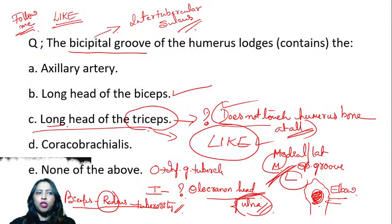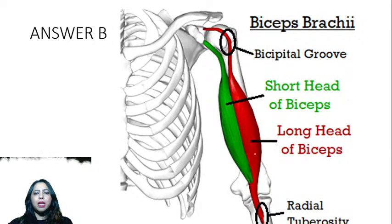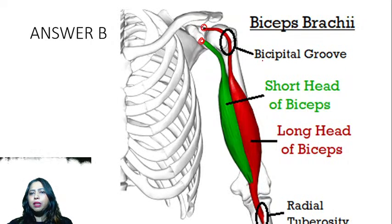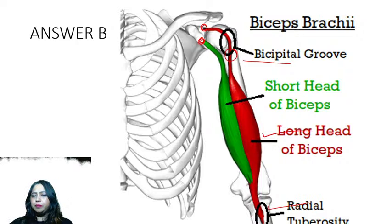To summarize the biceps: the long head of biceps passes through the bicipital groove, originating from the supraglenoid tubercle, while the short head originates from the coracoid process. They form a common tendon and insert at the radial tuberosity.